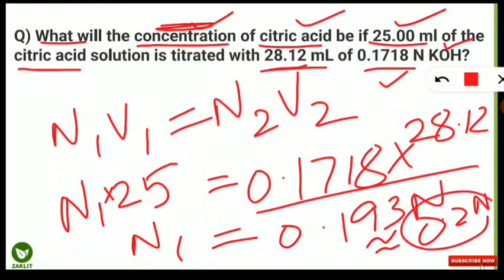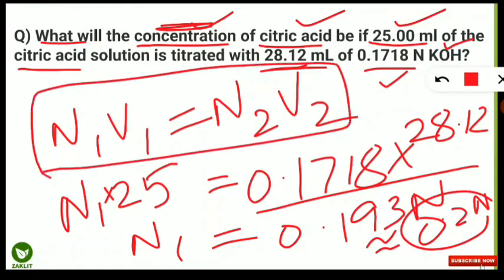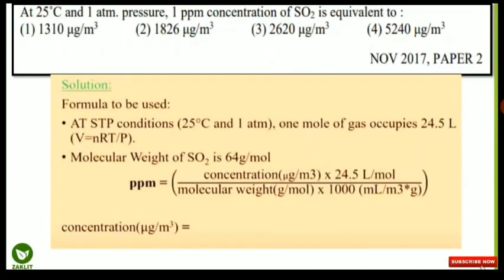Remember the formula: N₁V₁ = N₂V₂ when normality is given, or M₁V₁ = M₂V₂ when molarity is given. This is the key formula to get full marks on titration questions. Let's move to the next question.